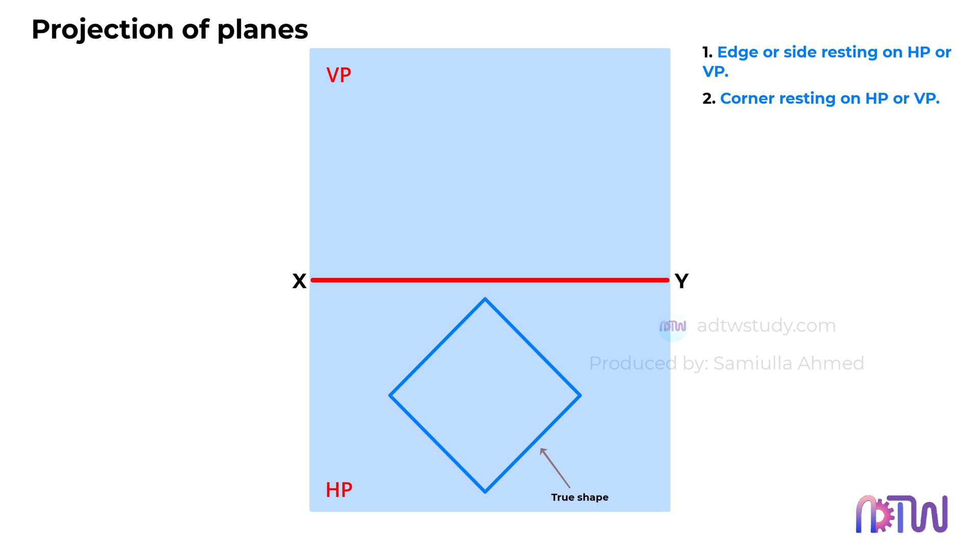Drawing true shape in relation to HP and VP. It's important to remember where to draw the true shape of the plane. If it's mentioned that the plane is resting on the HP, the true shape should be drawn below the reference line, representing its projection on the HP. Conversely, if the plane is resting on the VP, its true shape should be drawn above the reference line, indicating its projection on the VP.